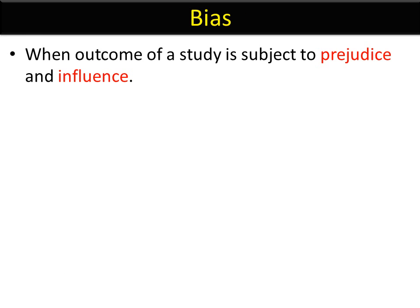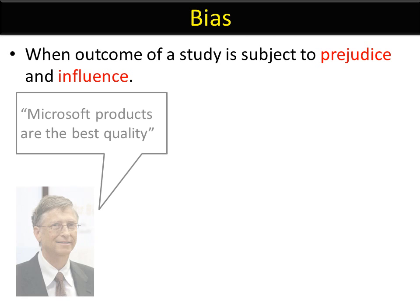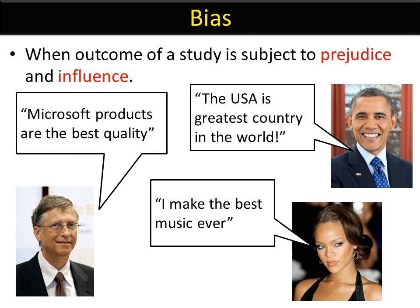Bias is when the result is affected by whoever's making the statements, subject to prejudice and influence. These are all examples of bias statements, because the person that made them is somehow connected to the research. It would be like if you asked my mother who's the best looking, smartest person in the room — she would hopefully say me, but that would be extremely biased research and probably very inaccurate.